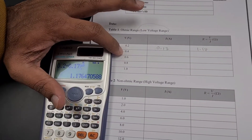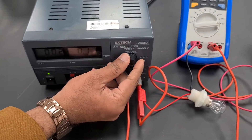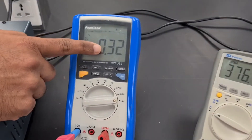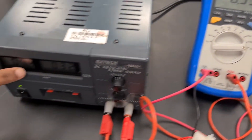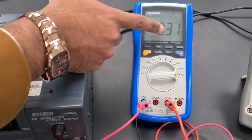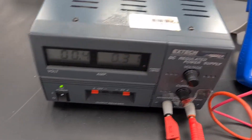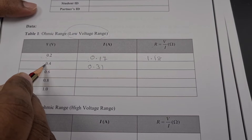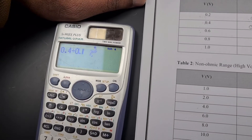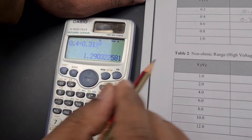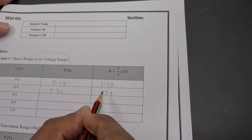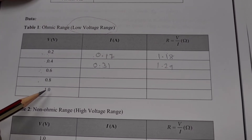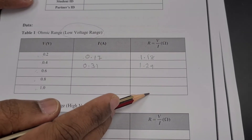Likewise, I am going to set 0.4 volts. The respective current is 0.31 amperes. So for 0.4 voltage, I got 0.31 current. I divide: 0.4 divided by 0.31 = 1.29 ohms. Likewise, you have to change the voltage by 0.2 increments — 0.6, 0.8, 1 — and once you get the current, use R = V/I to find the resistance for each.